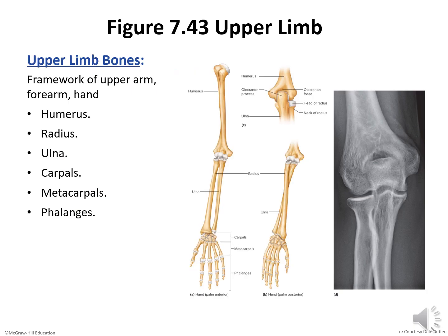The bones of the upper limb form the framework of the arm, forearm, and hand. They also provide attachments for muscles and interact with muscles to move limb parts. These bones include a humerus, a radius, an ulna, carpals, metacarpals, and phalanges.